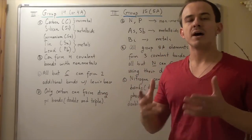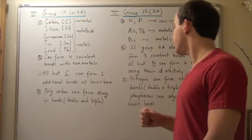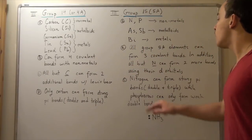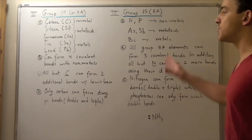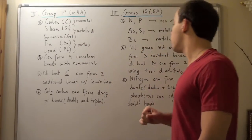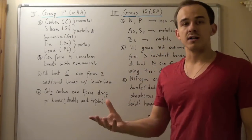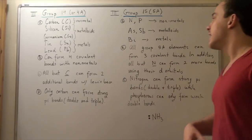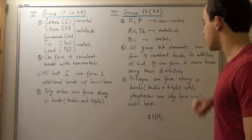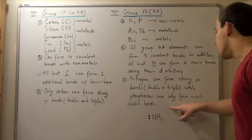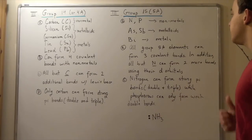We're going to talk more about d orbitals, p orbitals, and s orbitals in another lecture. Now nitrogen can form pi bonds, just like carbon can form pi bonds in group 14. These pi bonds can be triple bonds or double bonds, and they're relatively strong. But unlike group 14, phosphorus can also form a double bond, though it's a weak double bond — but regardless, it's still a pi bond.